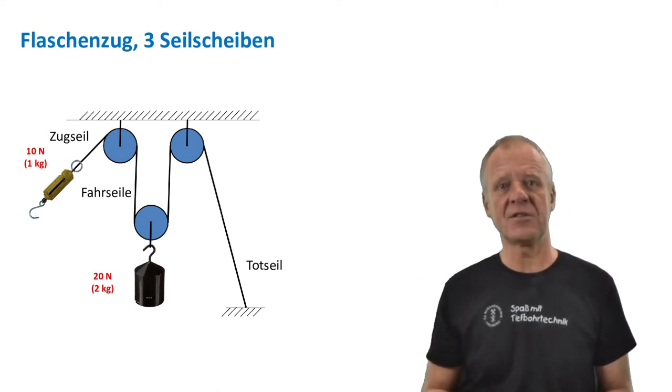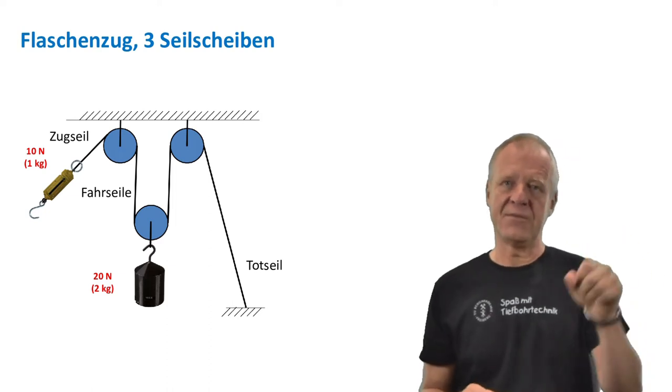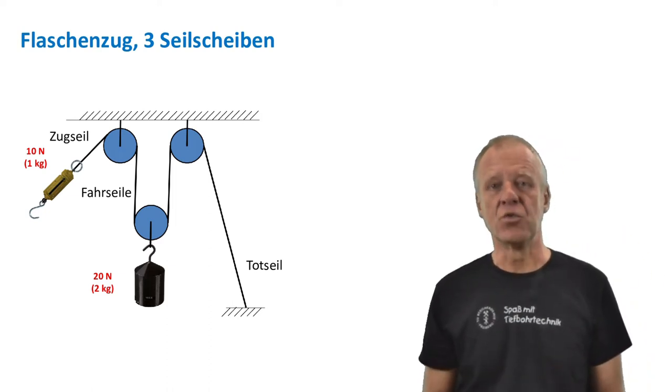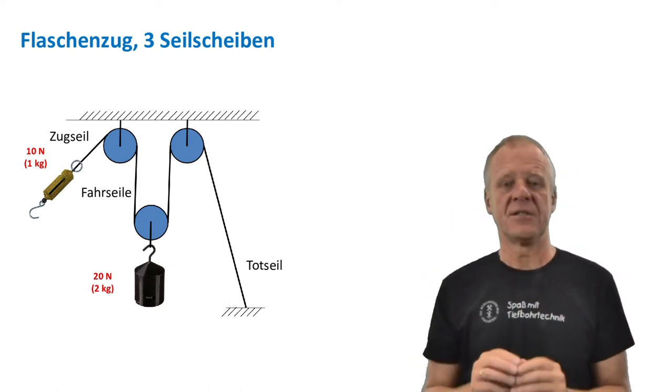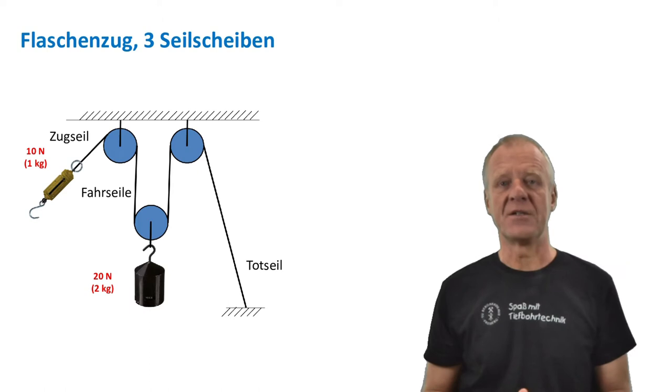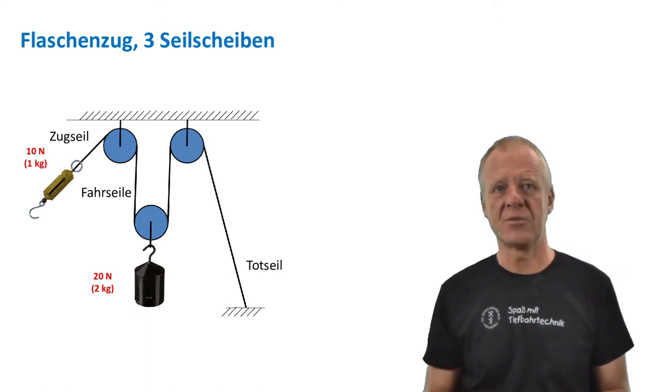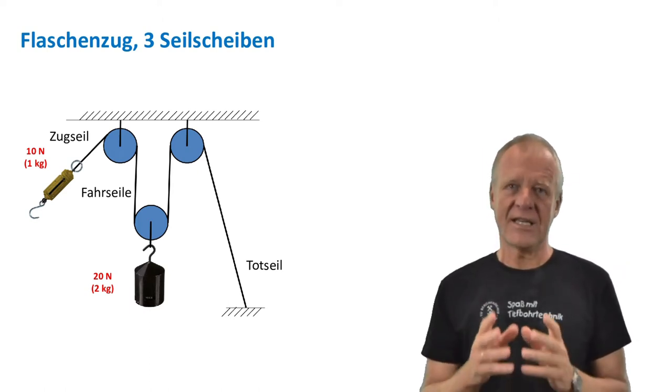This is why we call it the dead line. The other end of the rope where we pull to lift the weight is called the fast line. We can also see here, in the picture, two ropes between the pulleys, which we call the traveling lines.